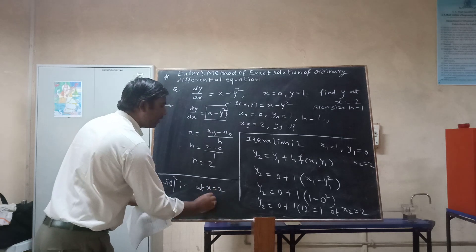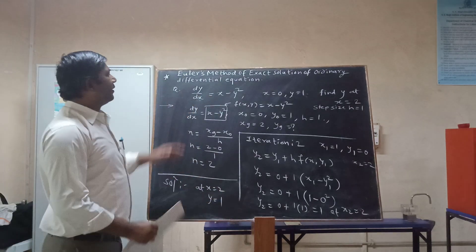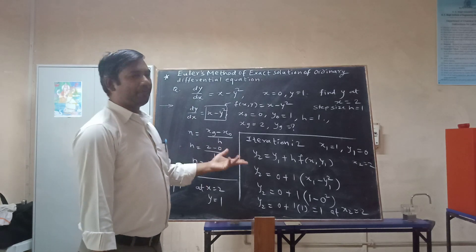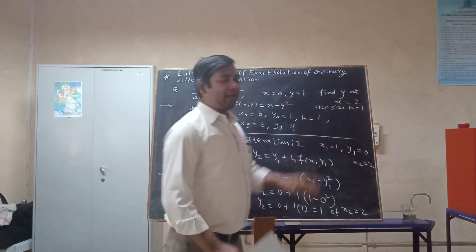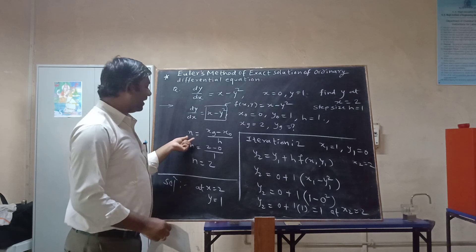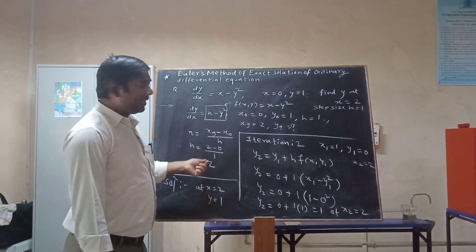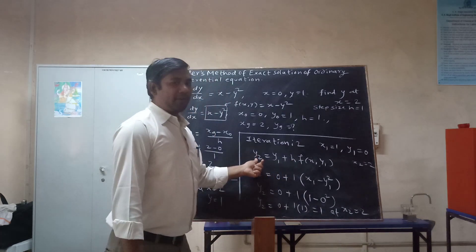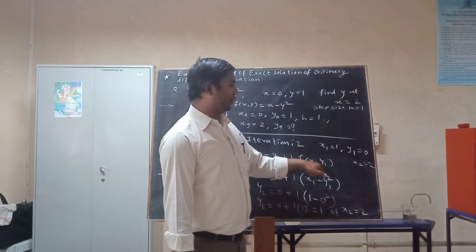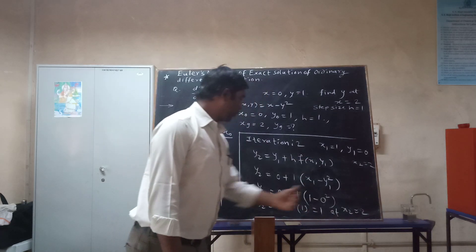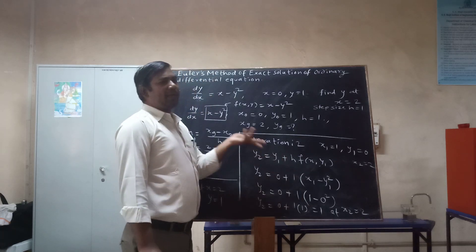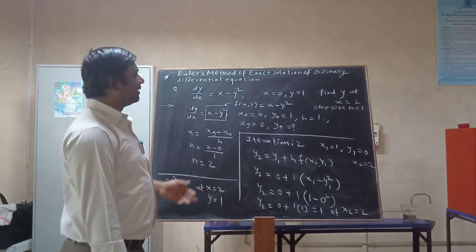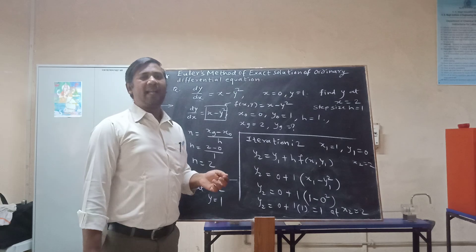At x=2, y=1. This is Euler's method to find the solution of an ordinary differential equation. If they ask for y at x=3, n would be 3 and you would do a third iteration: y₃ = y₂ + h · f(x₂, y₂), substituting x₂=2 and y₂=1. In this way you can progressively find solutions by Euler's method. If you like this video please share and subscribe, thank you.